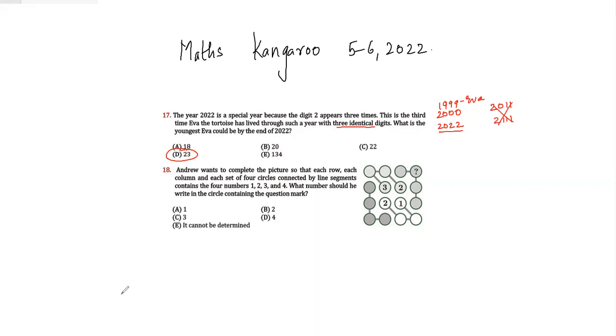Now let's look at question number 18. Andrew wants to complete the picture so that each row and each column and each set of four circles connected by line segments contains the four numbers 1, 2, 3, 4. What number should he write in the circle containing the question mark?